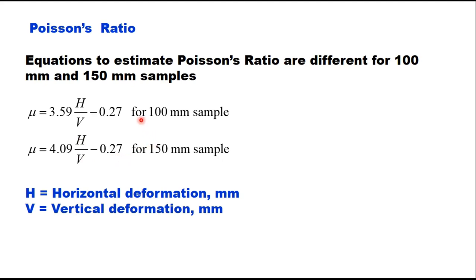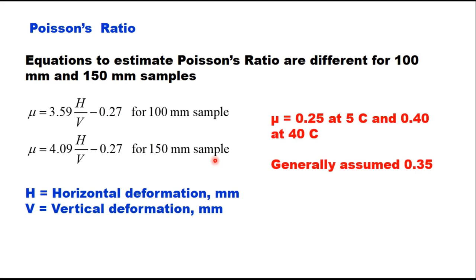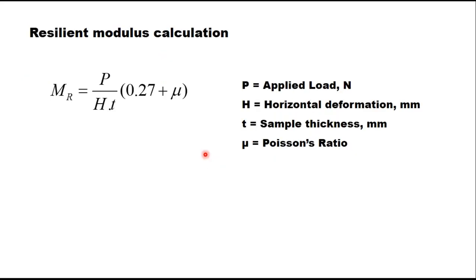The value of mu varies with temperature — it is 0.25 at 5 degrees centigrade and 0.4 at 40 degrees centigrade. Generally, the value of mu is assumed as 0.35 in all calculations. The equation to calculate MR is: MR = P / (H × T) × (0.27 + mu).